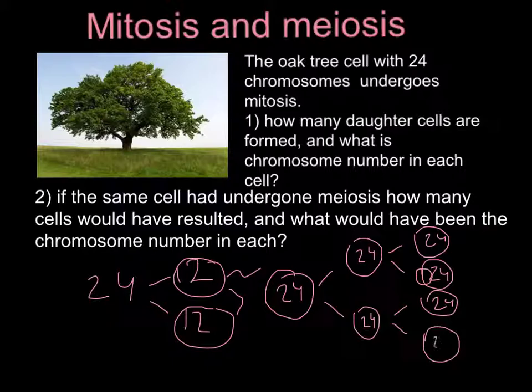This is how the zygote — the fertilized egg — produces a new organism through the process of mitosis. Mitosis and meiosis are different, and on the next slide I will use a different example from the human genome.